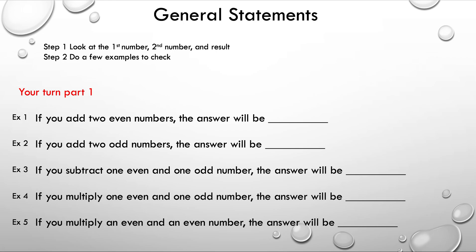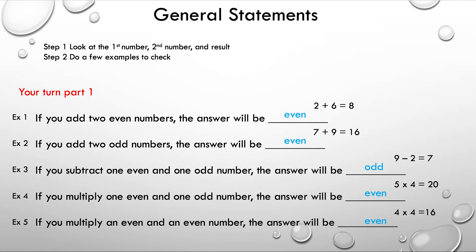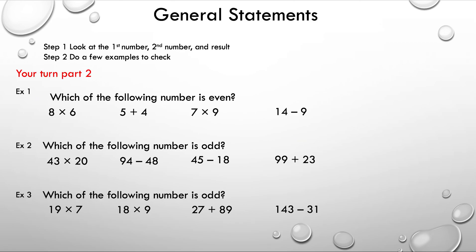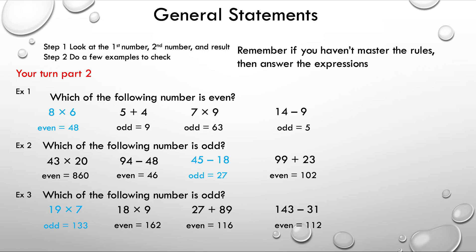Here it is — your turn for Part 1. Go ahead and pause the video, take your time to answer the questions, and see if you get them correct. I'll show you the answers in three, two, one. Here are the answers with examples for each one — if you got them correct, well done; if you didn't, there's always tomorrow. Now here's Part 2: answer the questions, pause the video, take your time. Remember, if you haven't mastered the rules, go back and work through the expressions to answer with more confidence. If you got them correct, well done; if not, there's always tomorrow.